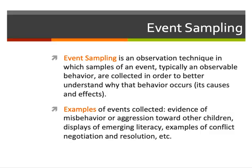Event sampling is a type of observation technique in which samples of an event — typically an observable behavior — are collected in order to better understand why that behavior occurs. Through event sampling we can determine the behavior's causes and effects, which comes in handy when we are trying to understand why a child behaves in a certain way and what triggers that behavior for our focal child.